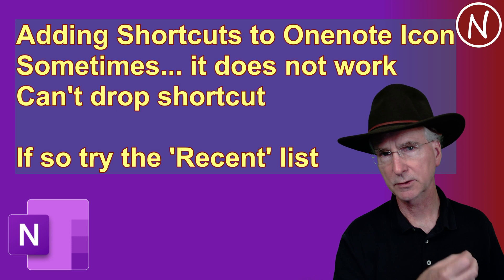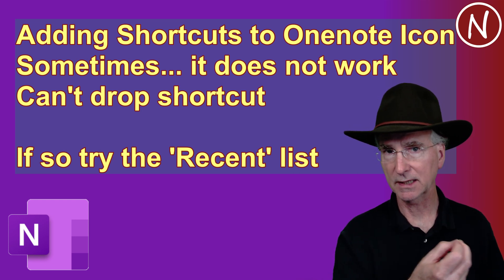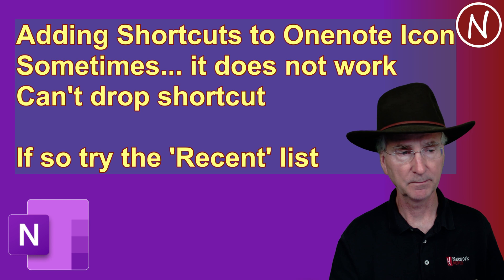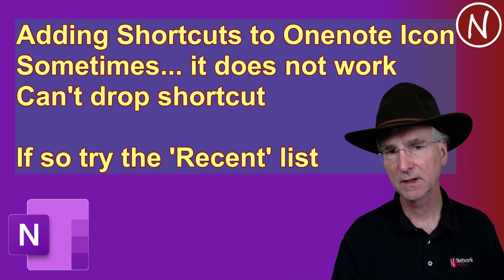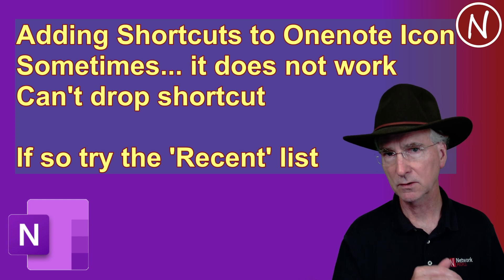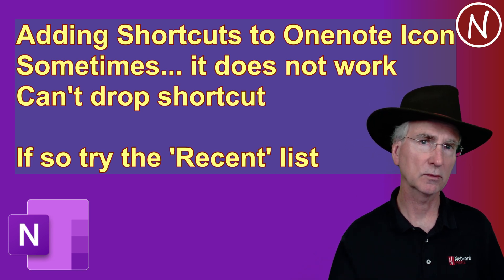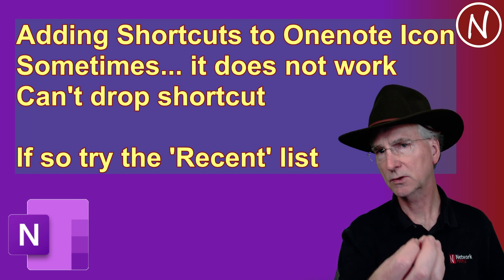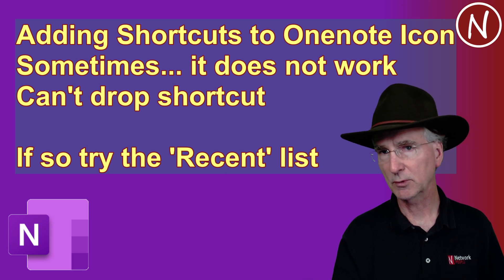Now, sometimes the ability to drag a shortcut down to the OneNote taskbar icon doesn't work. When you try to drag it, you get a circle with a line through it — the universal symbol for 'no' — and it just won't let you add that shortcut. This seems to happen randomly across different OS versions with no clear reason, and the same problem occurs when trying to pin shortcuts for Excel or Word documents to their respective taskbar icons.